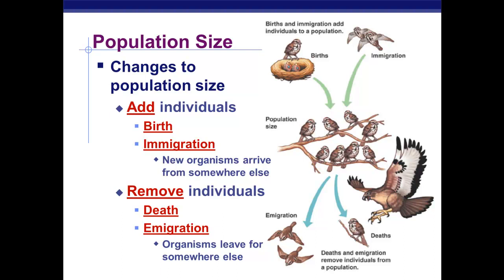One way to remember the difference: immigration starts with an I, like 'in,' and emigration starts with an E, like 'exit.' So immigration means coming in, emigration means exiting. The balance of these factors — adding and removing individuals — determines the population growth of an area.